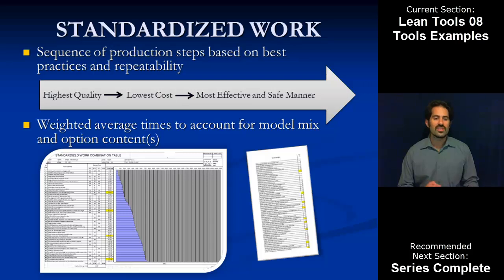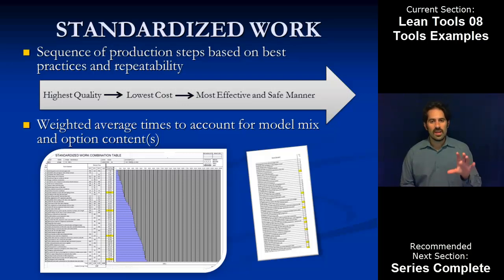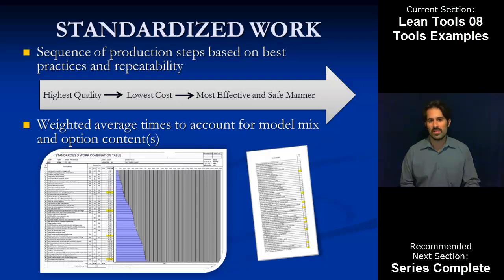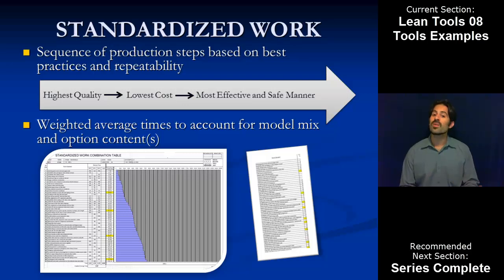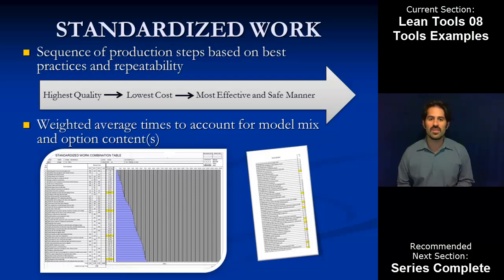For organizations that produce a variety of product with option content, in terms of pull system context — Type B systems — standardized work works for that as well. We use weighted average times to account for that model mix. The key thought is that even if there's a lot of volatility or variability, we want to standardize what we can, put a number to what we can as a basis to start working from. It's never perfect, but we start where we can and work to continuously improve.